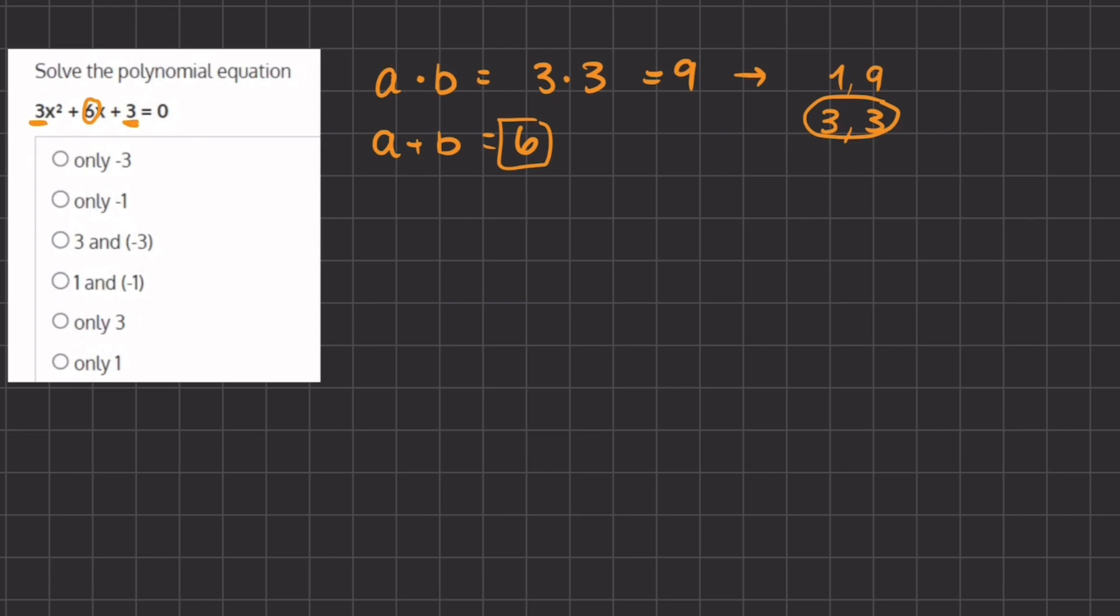Therefore we are going to take this 3 and 3 and break up this middle term 6x into 3x and 3x using these two numbers. So we have 3x squared plus 3x, which is our a, and our b which is also 3, plus 3x plus 3 equals 0.